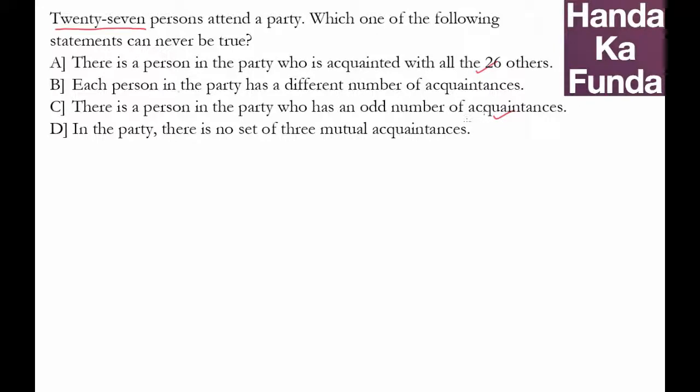In the party there is no set of three mutual acquaintances. So what three mutual acquaintances means is that I know a set of three people and you also know the same set of three people, which is also quite possible. So very quickly without any thinking or calculation we have found out the answer as B.